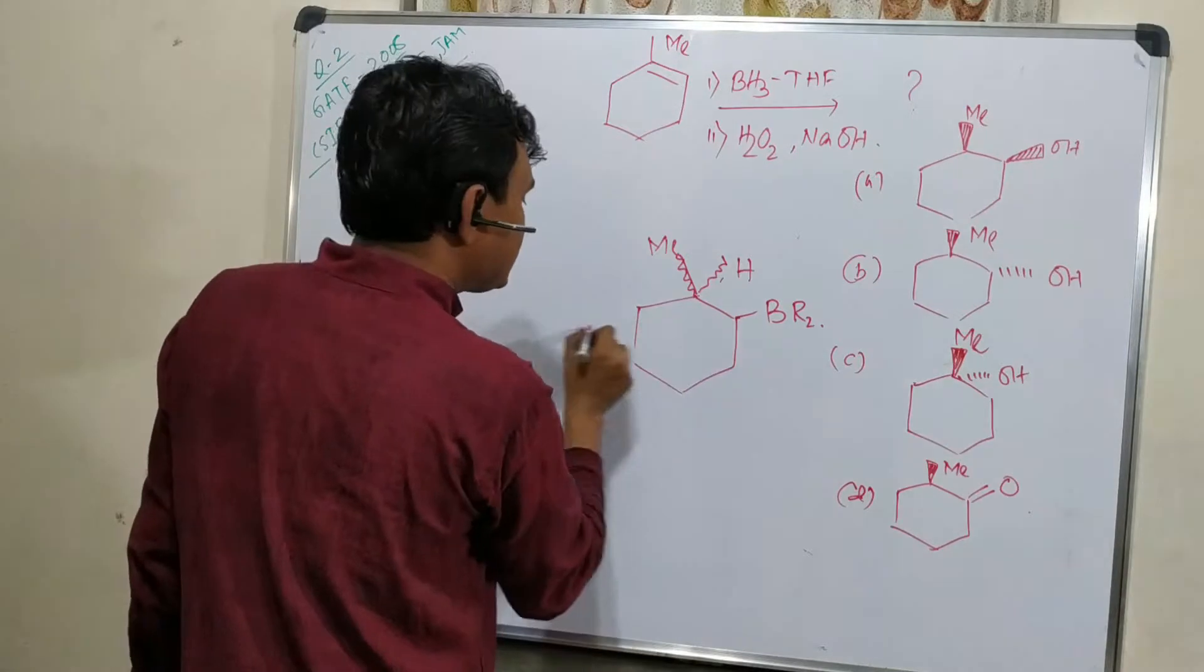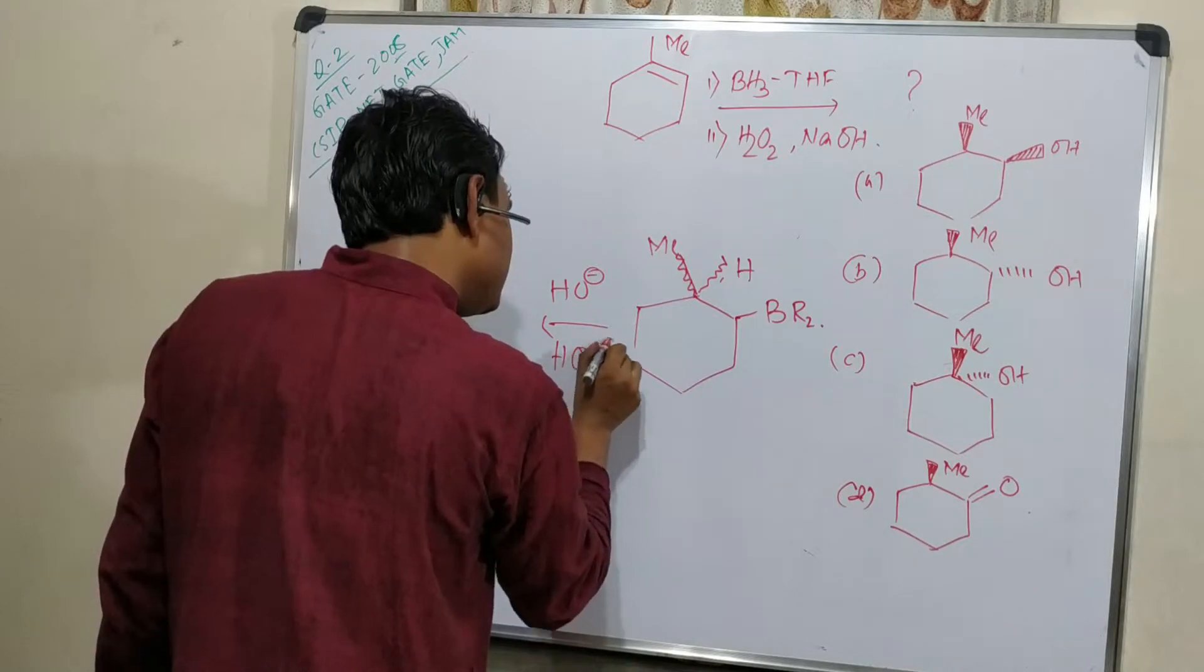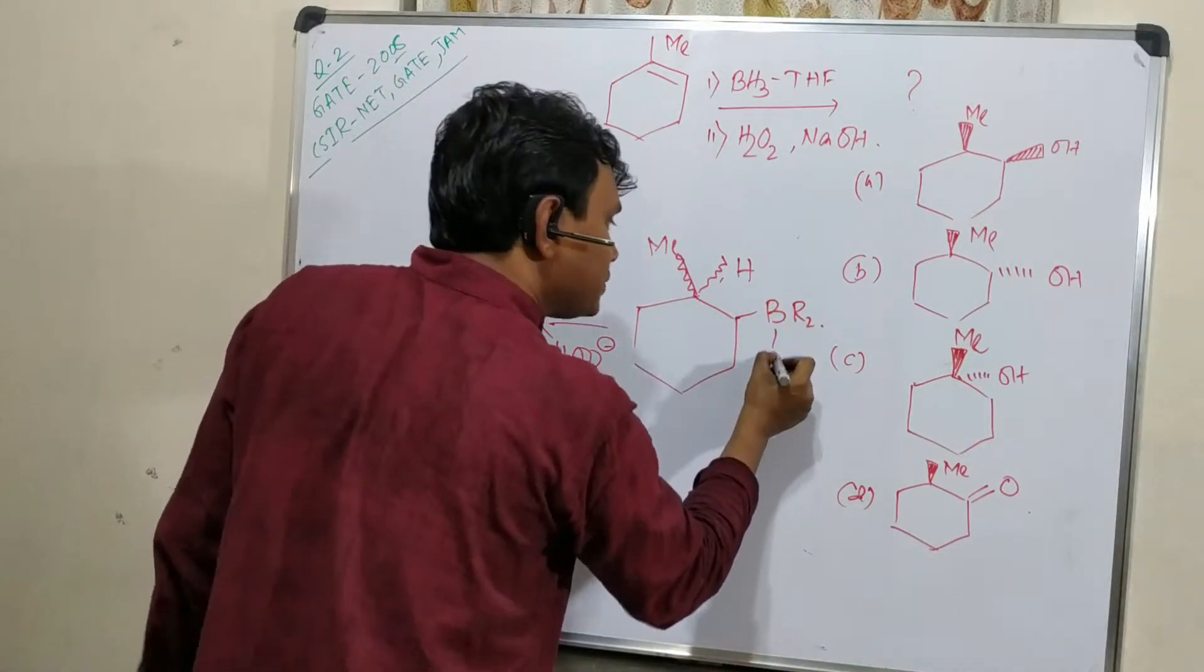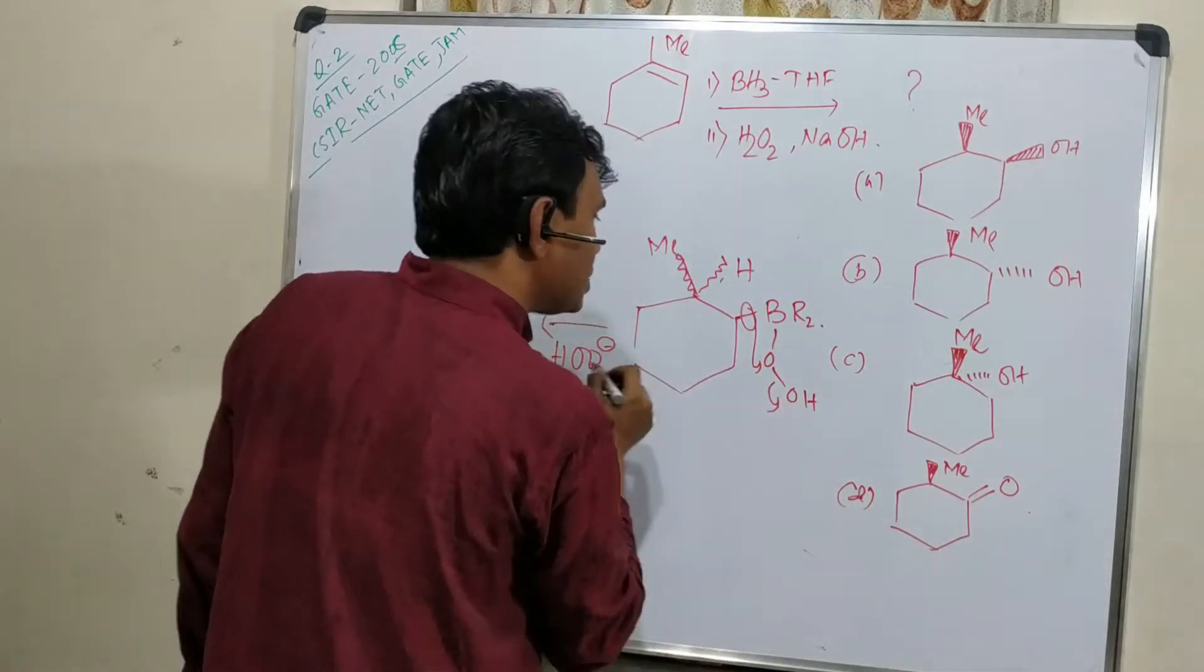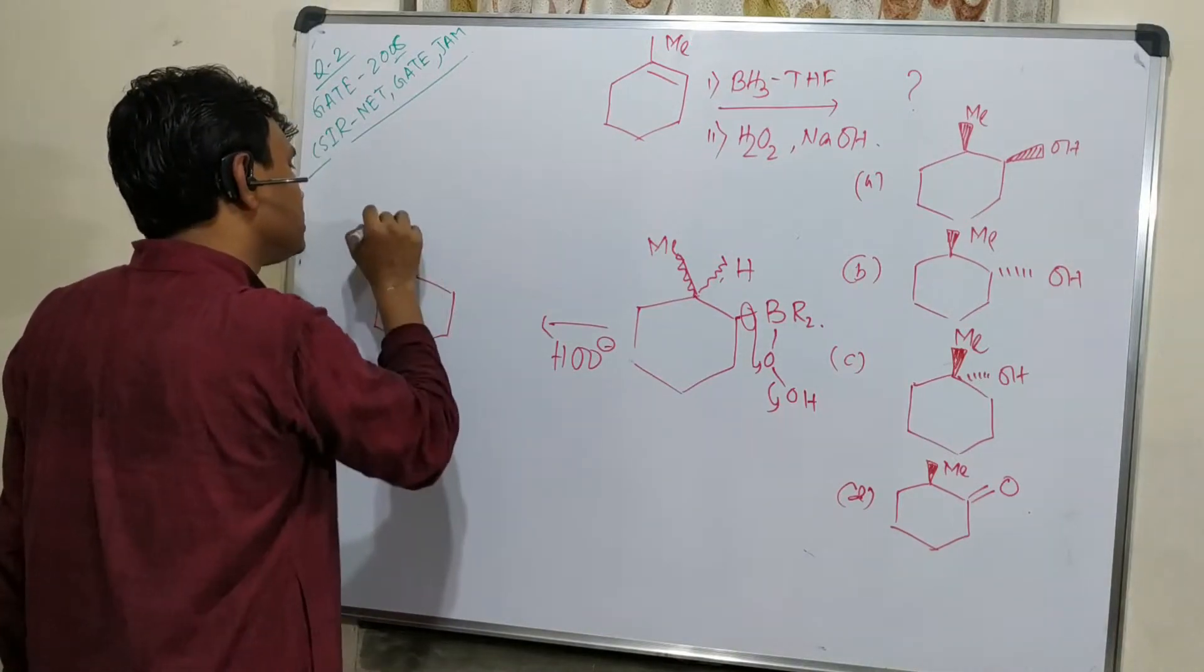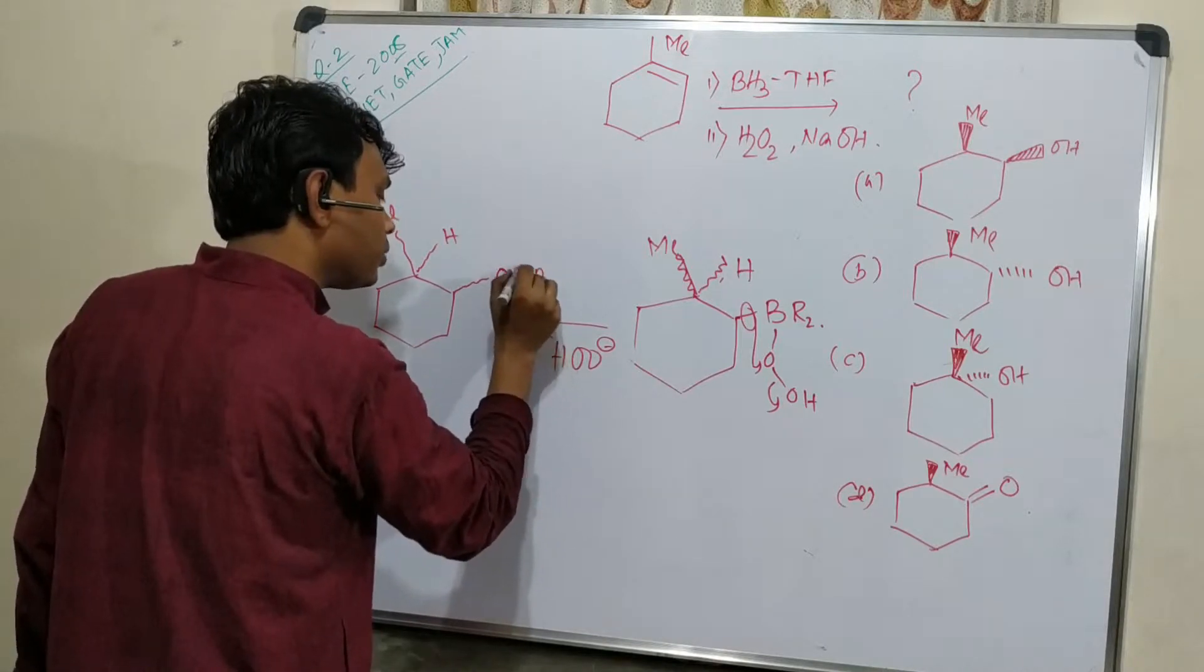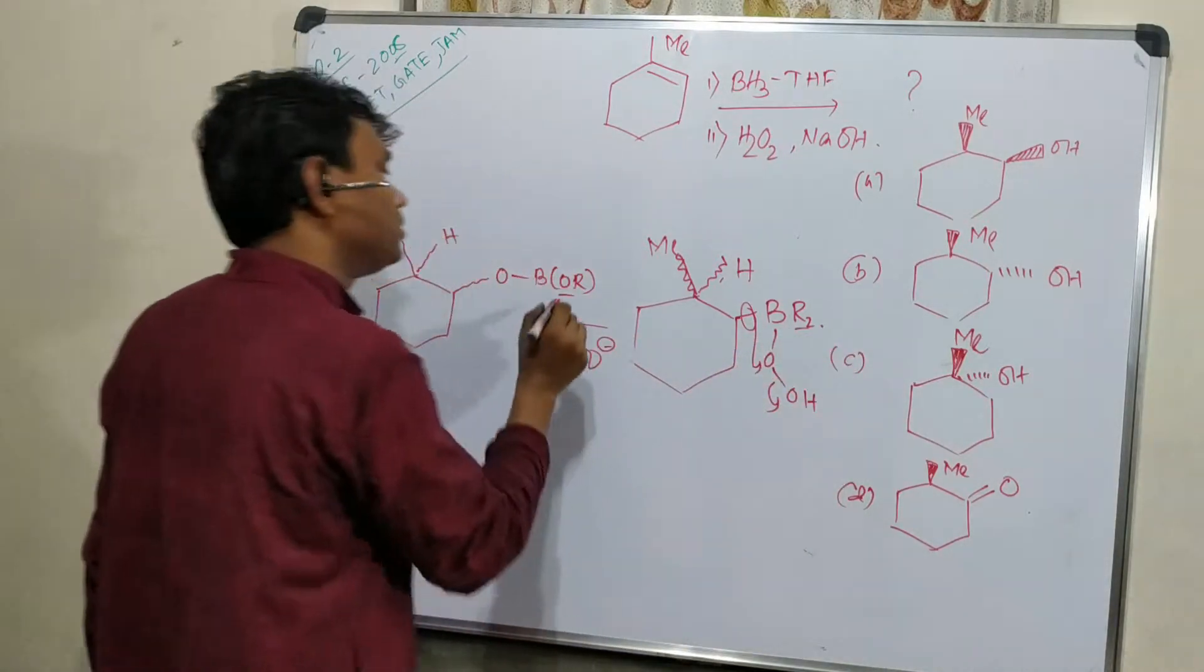What will happen after that? It will undergo oxidation in presence of alkaline hydrogen peroxide. The reagent is hydrogen peroxide with NaOH. H2O2 minus will be produced in presence of alkali and that will attach first with this boron, and secondly migration will happen from this to this. So ultimately what will be produced?